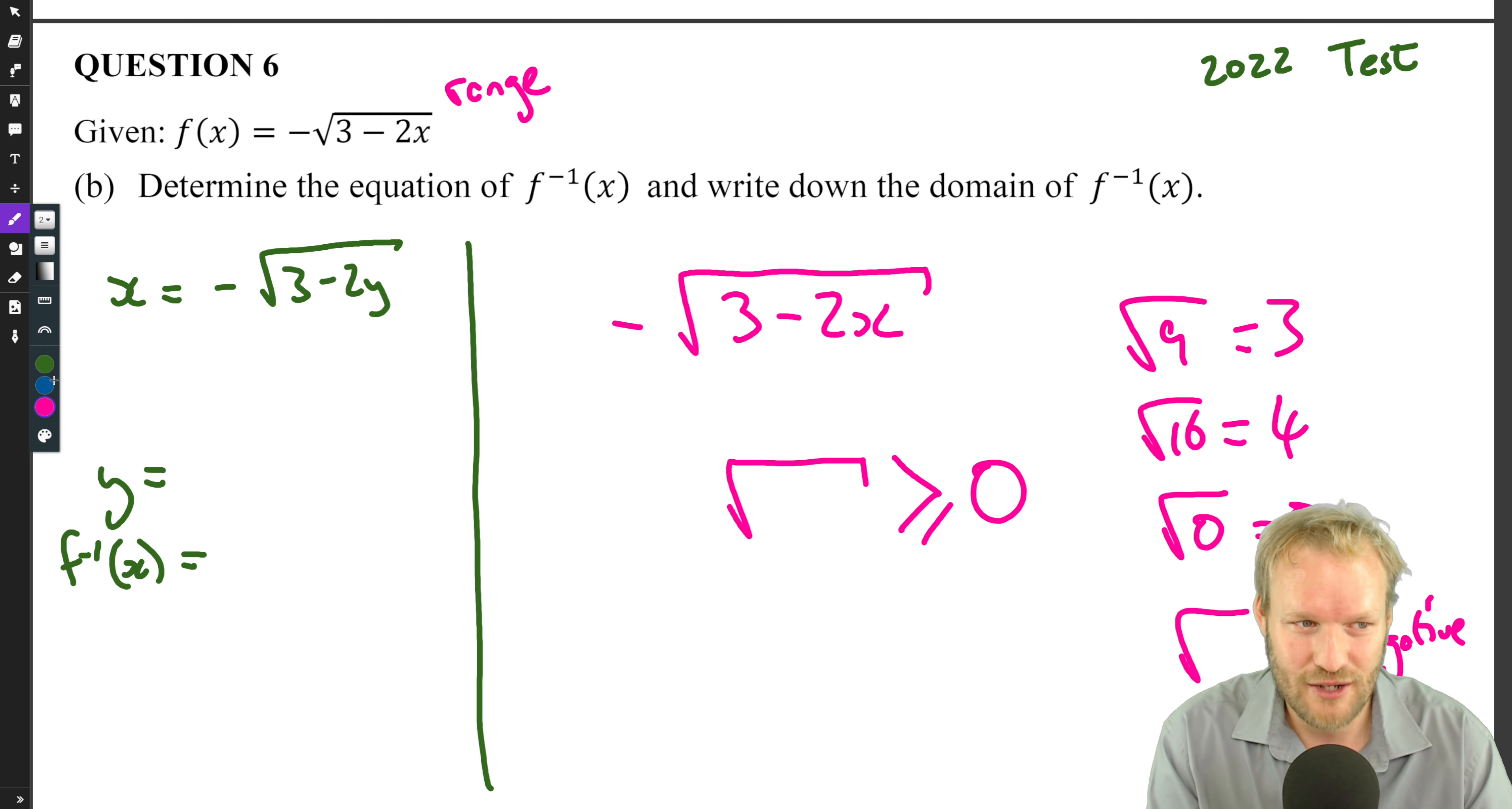So in other words, the square root is always going to be greater than or equal to zero. But then we're taking the negative.